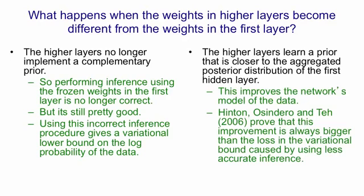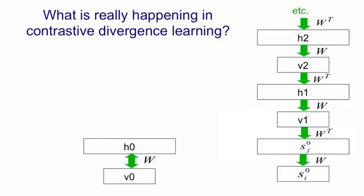If you look at those two effects, we proved that the improvement you get in the variational bound from having a better model is always greater than the loss from inference being slightly incorrect. So in this variational bound you win when you learn the weights in higher layers — assuming you do it with correct maximum likelihood learning. Now let's go back to what's happening in contrastive divergence learning. We have the infinite net on the right and the RBM on the left, and they're equivalent. If we were to do maximum likelihood learning for the RBM it would be maximum likelihood learning for the infinite sigmoid belief net.